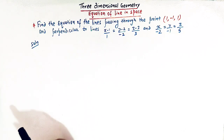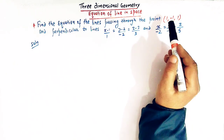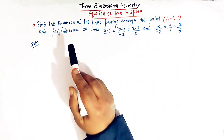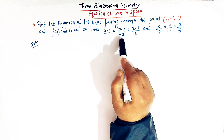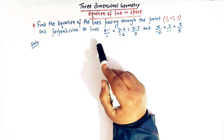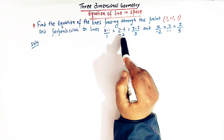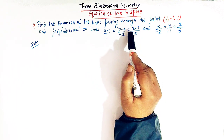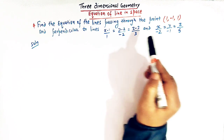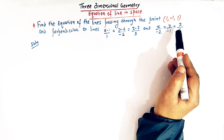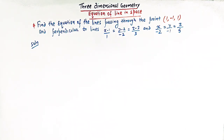We have to find the equation of a line which passes through the point 1, minus 1, 1 and the line is perpendicular to two lines whose equations are: x minus 1 over 1 equals y minus 2 over minus 2 equals z minus 3 over 3, and x over minus 2 equals y over minus 1 equals z over 5. So let us start.